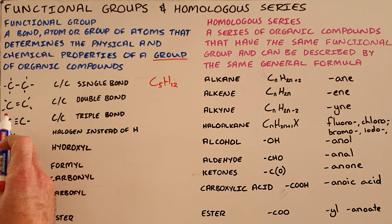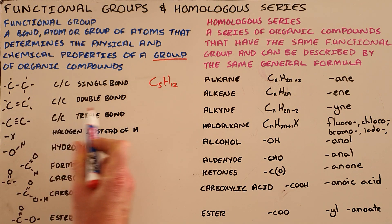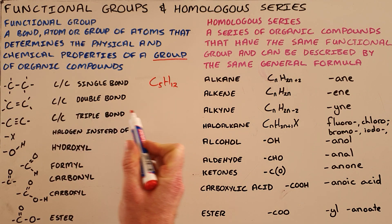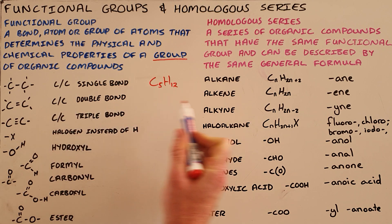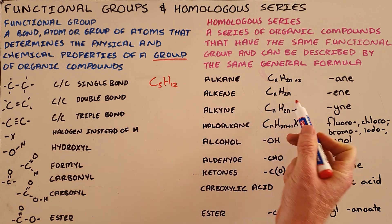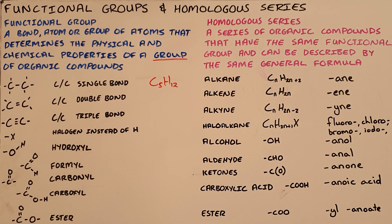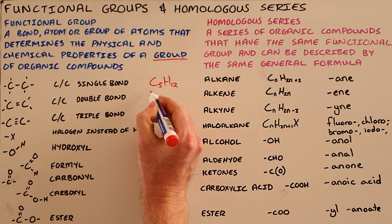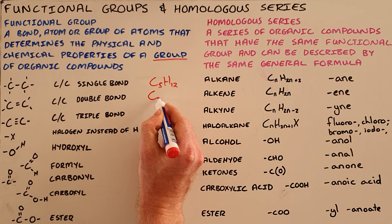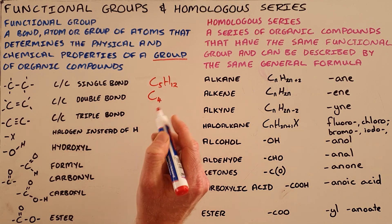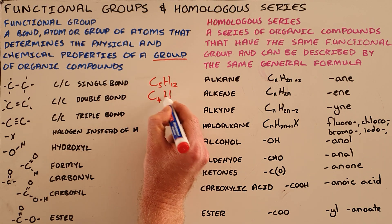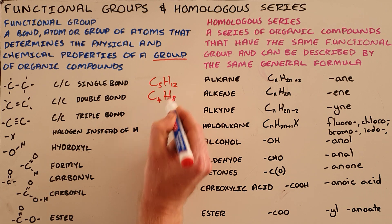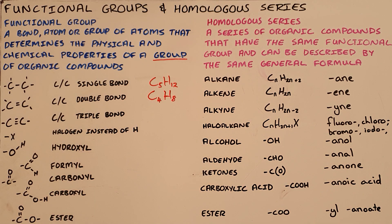Similarly, a compound that contains a double bond is called an alkene and has the general formula CnH2n, which tells us that if it contains only one double bond and has 4 carbons, then it would have 8 hydrogens. Alkenes always get the suffix -ene.